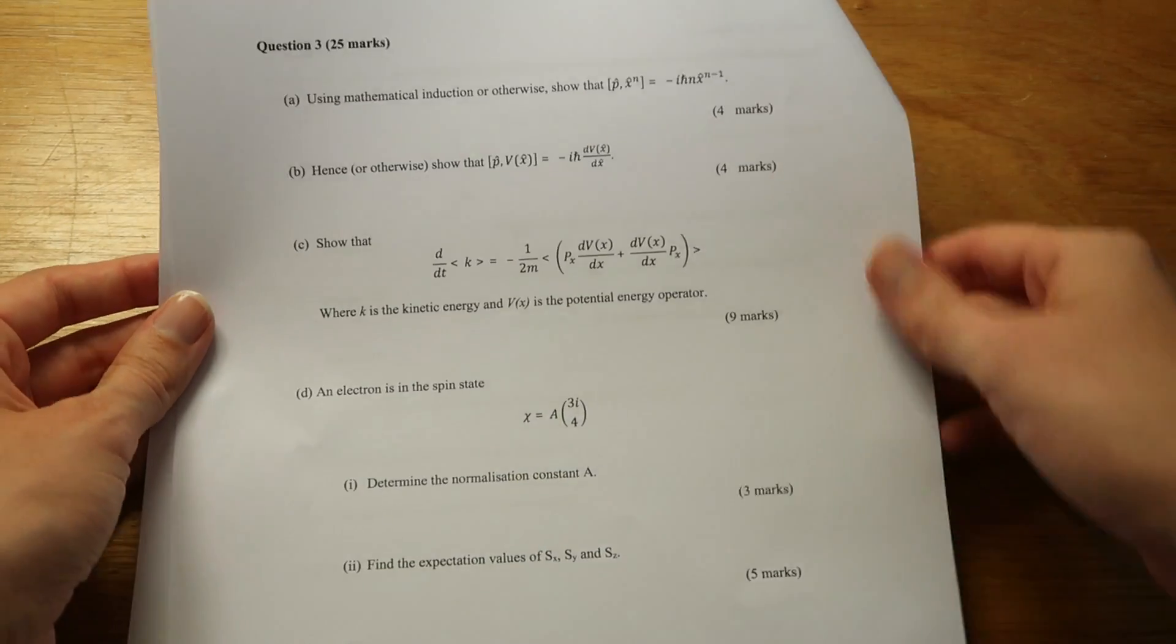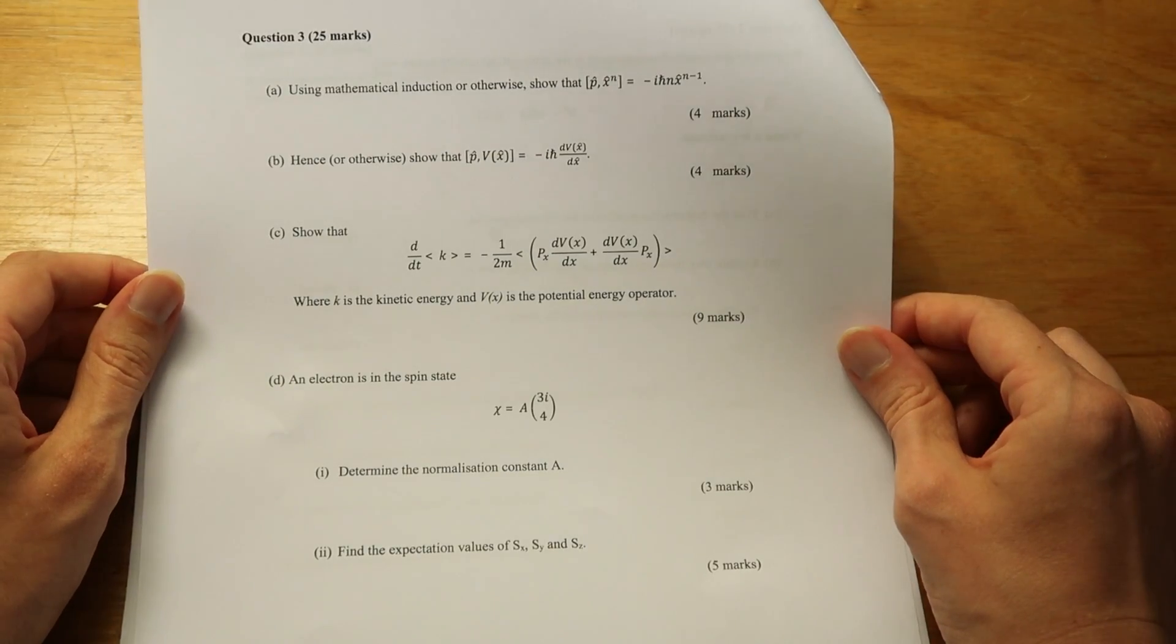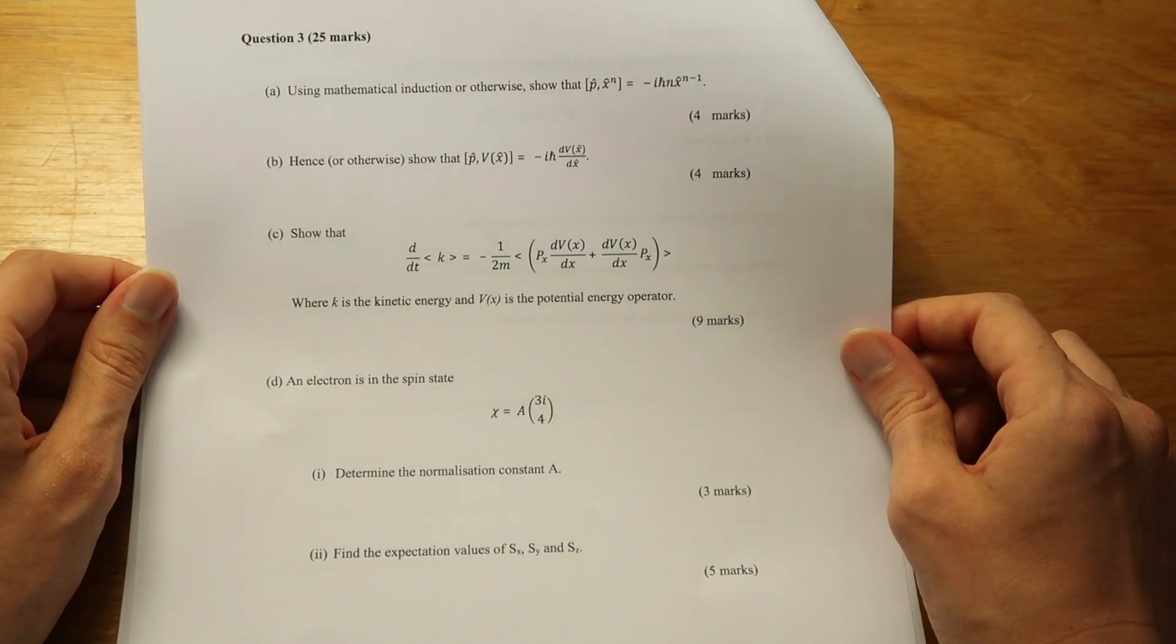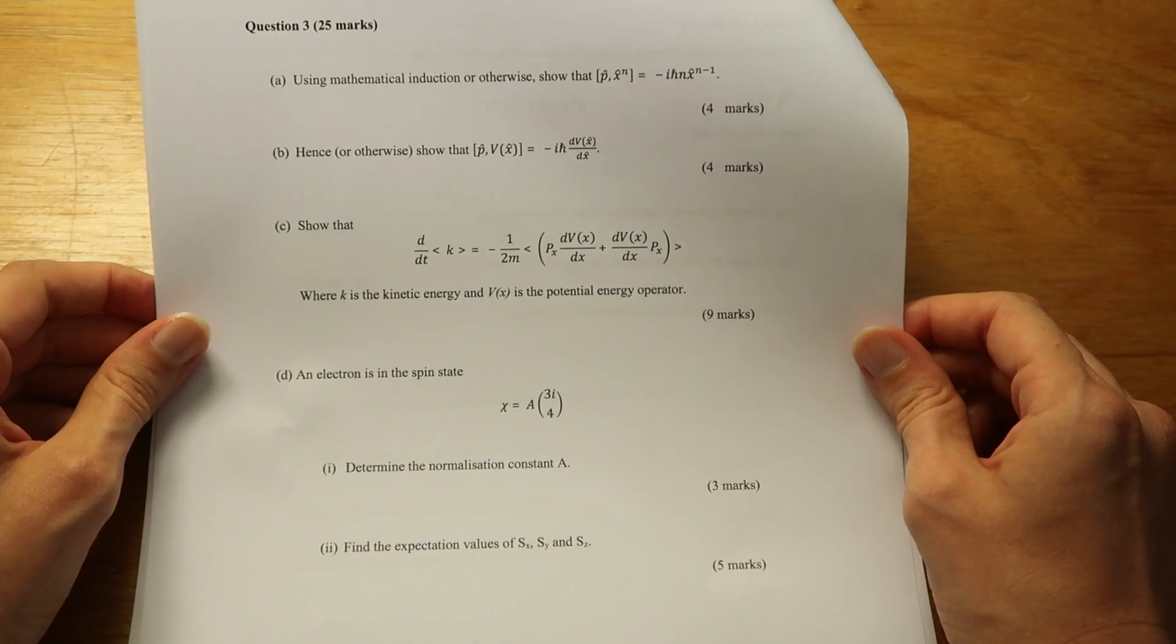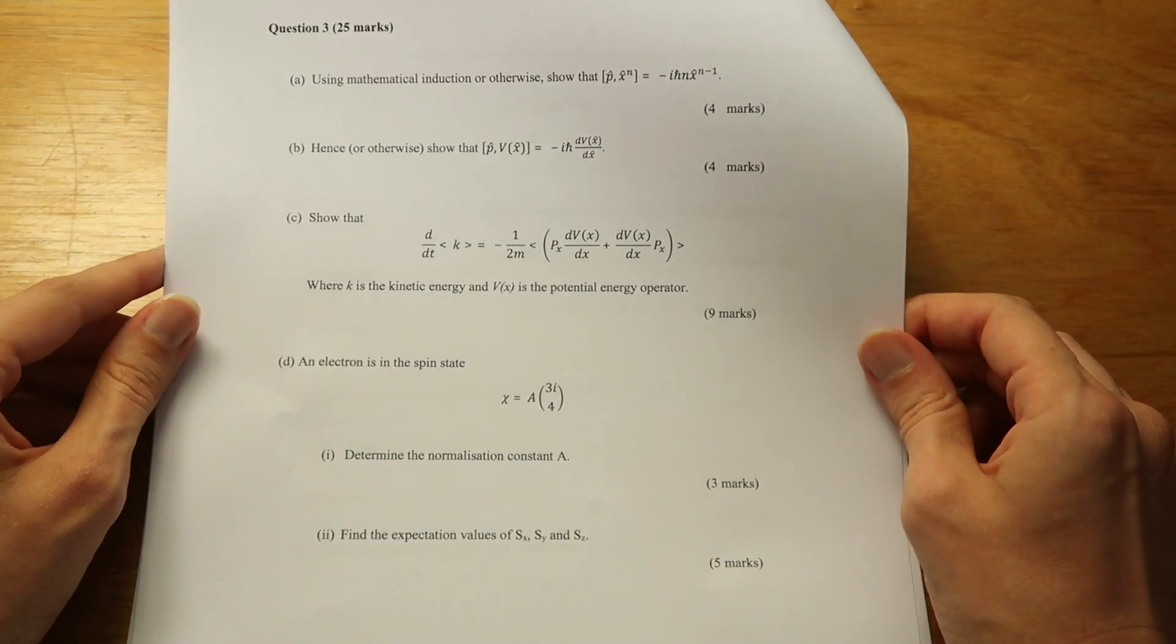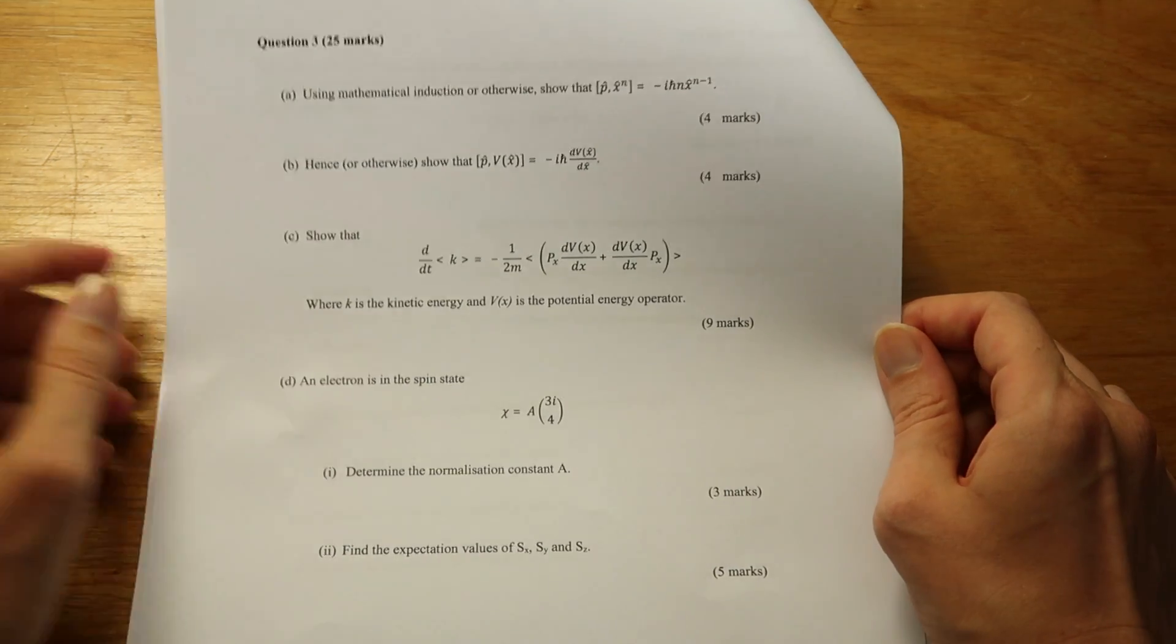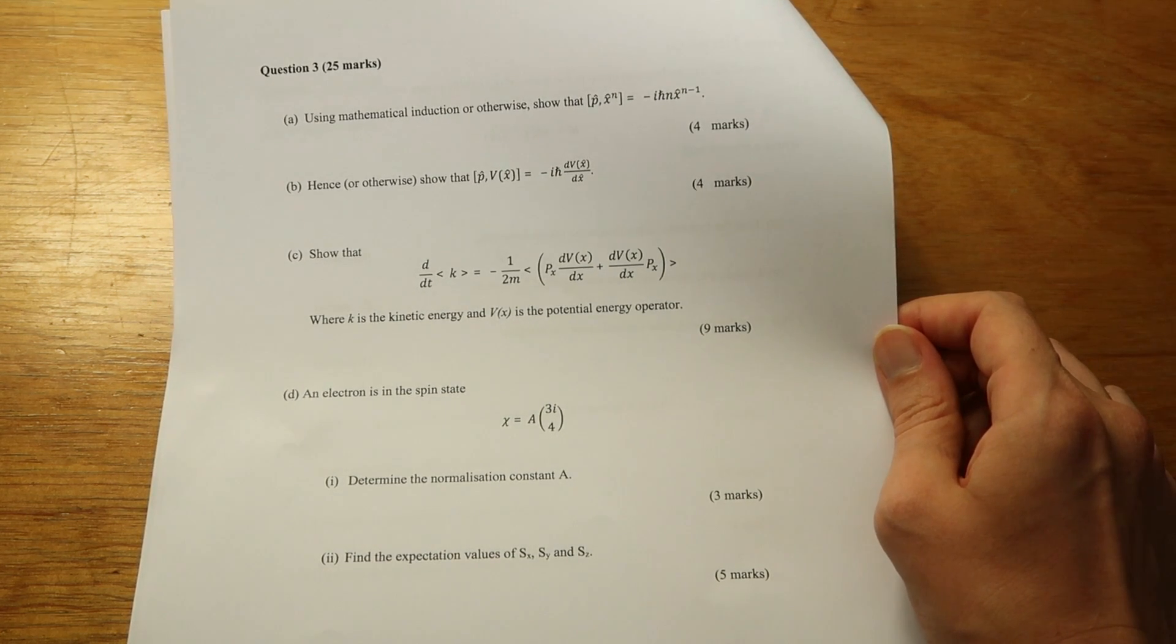Our third question is also a quantum mechanics problem. It's dealing with some sort of identities, commutator relations, and really it's a whole bunch of proofs. When I was doing this exam, getting to this page, the page of quantum mechanics proofs and to show things, is where my heart sinks because those are to me the hardest questions.